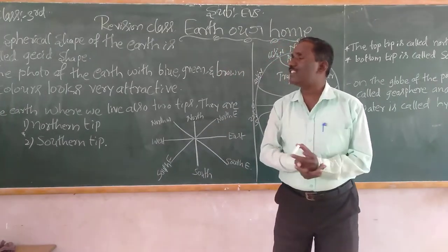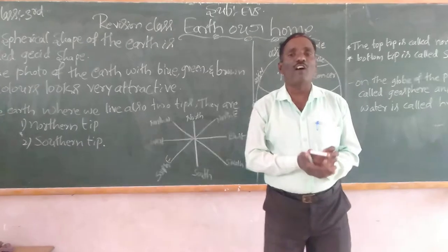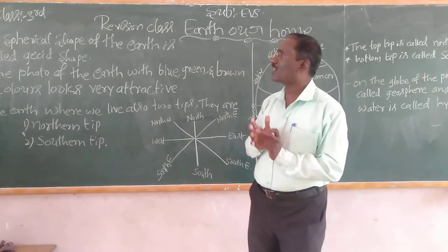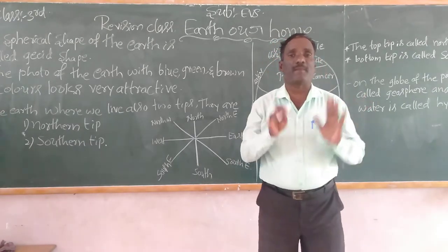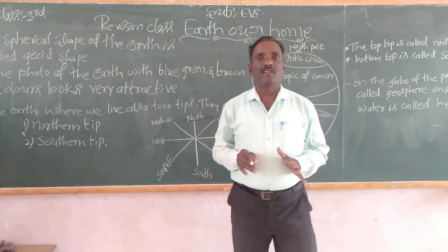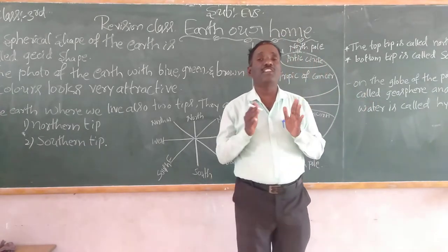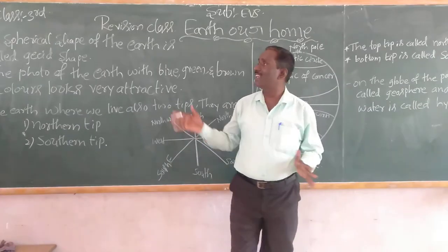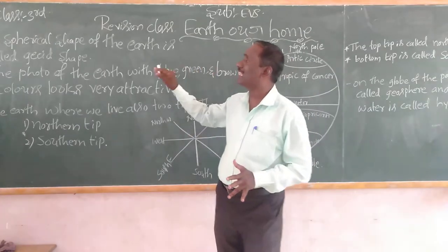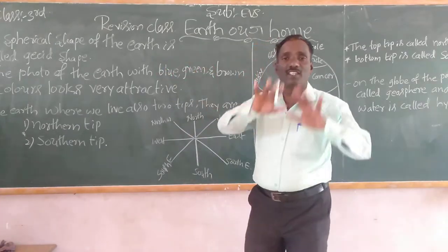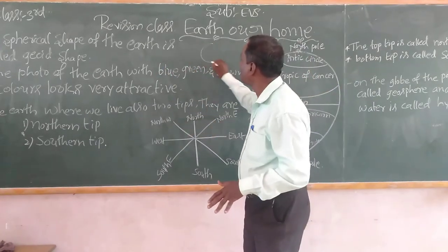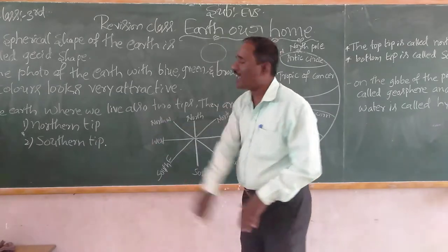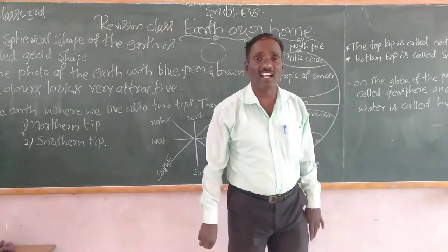The spherical shape of the earth is called Jeel shape. The earth's shape is also called a circle shape.